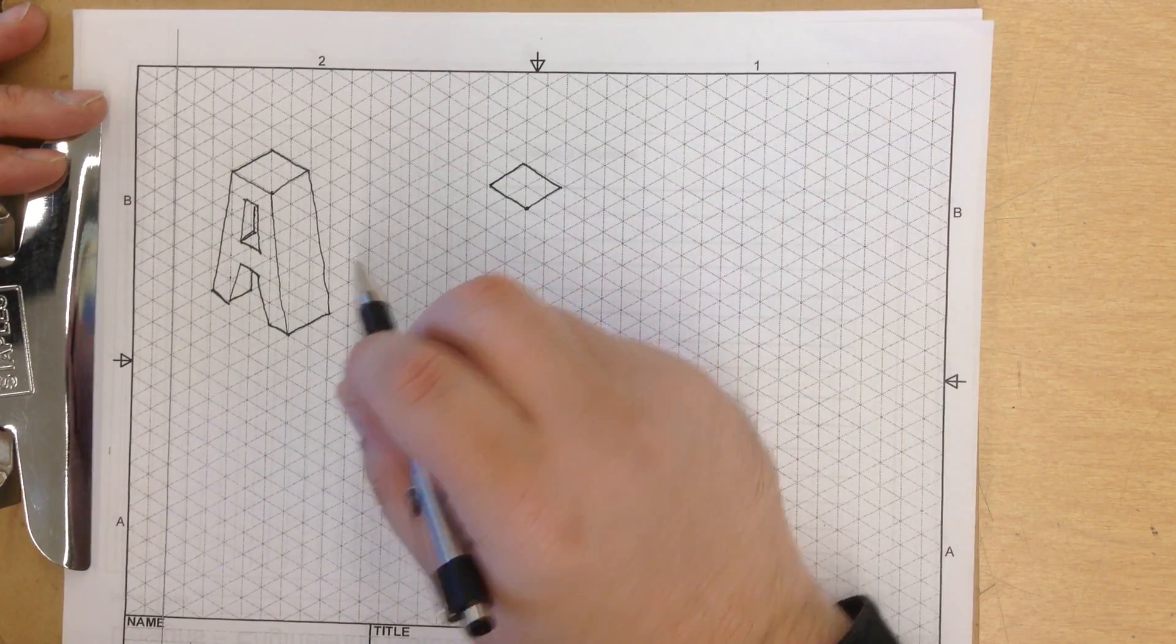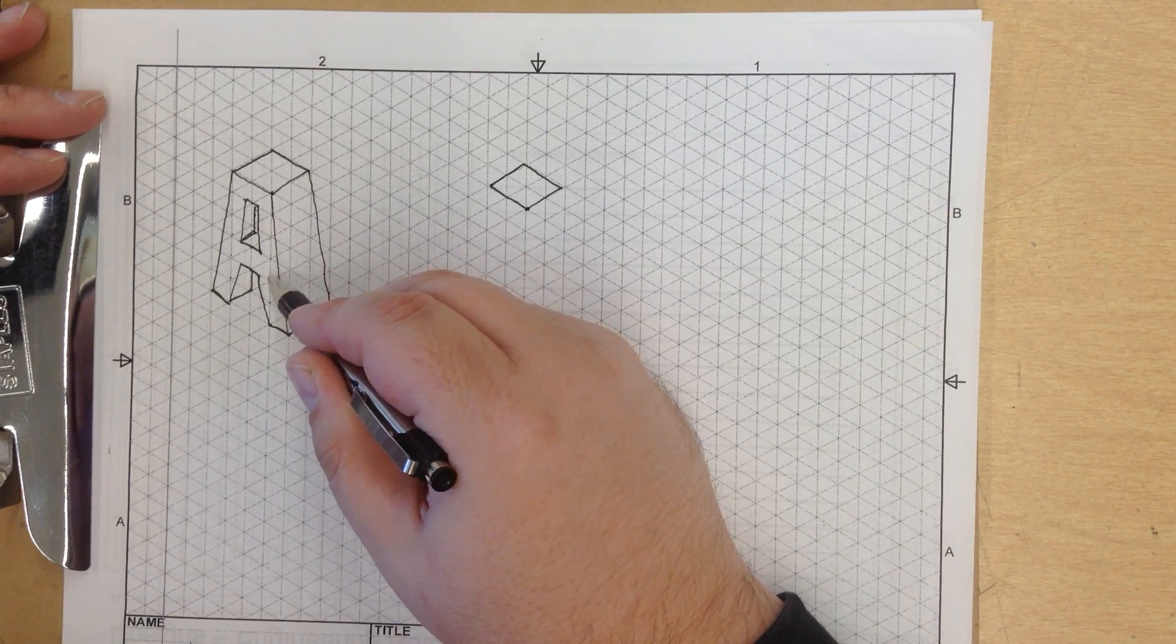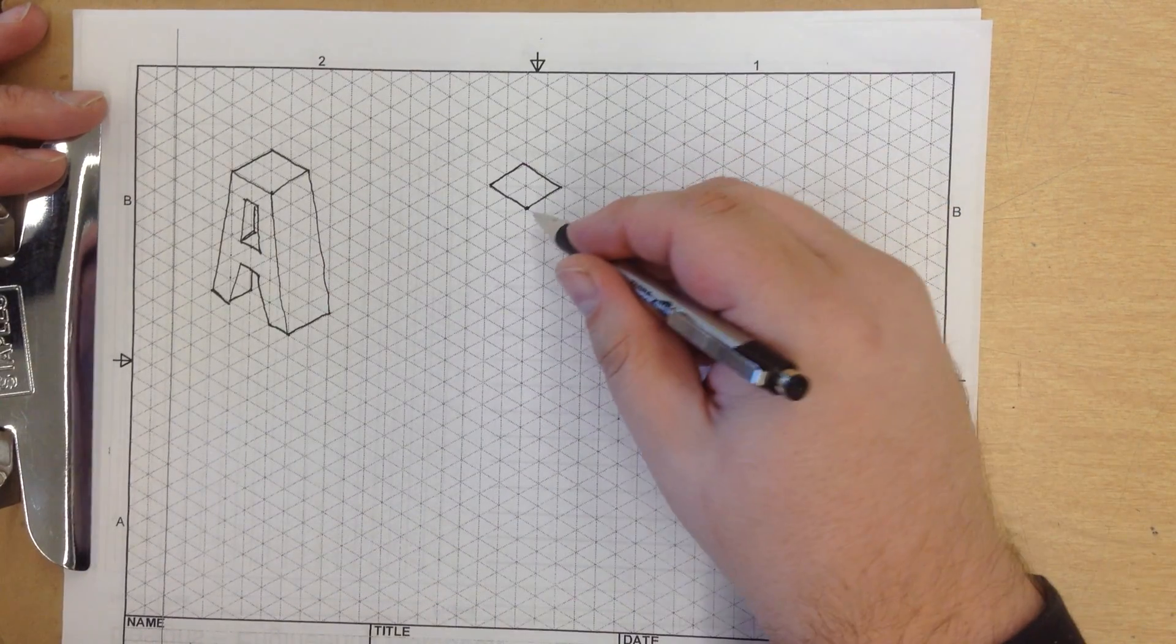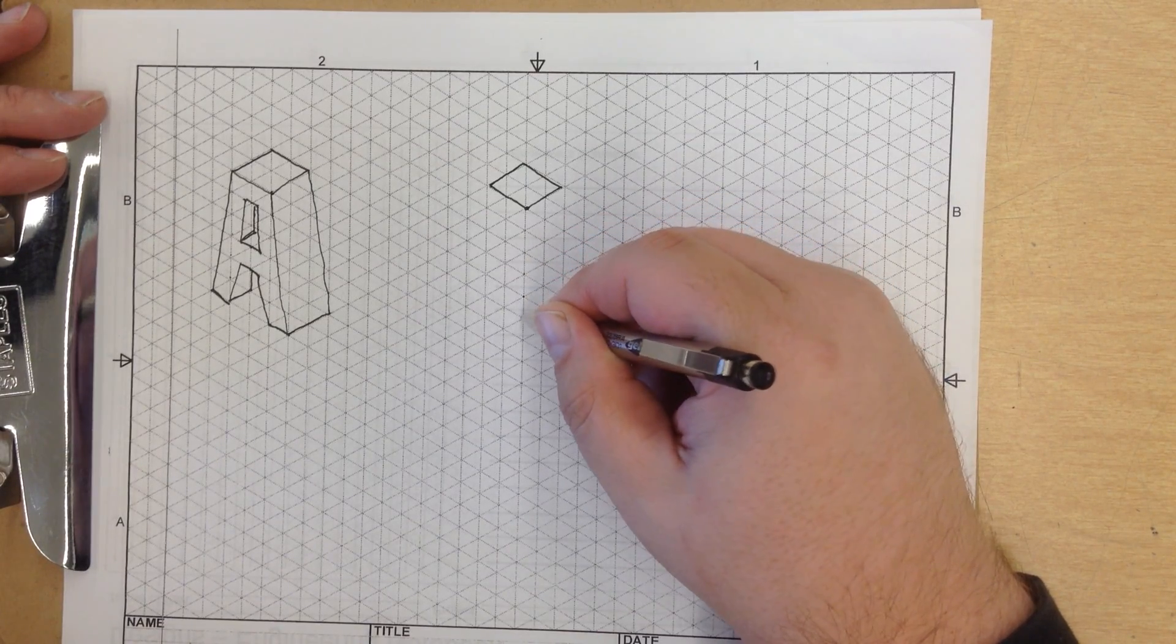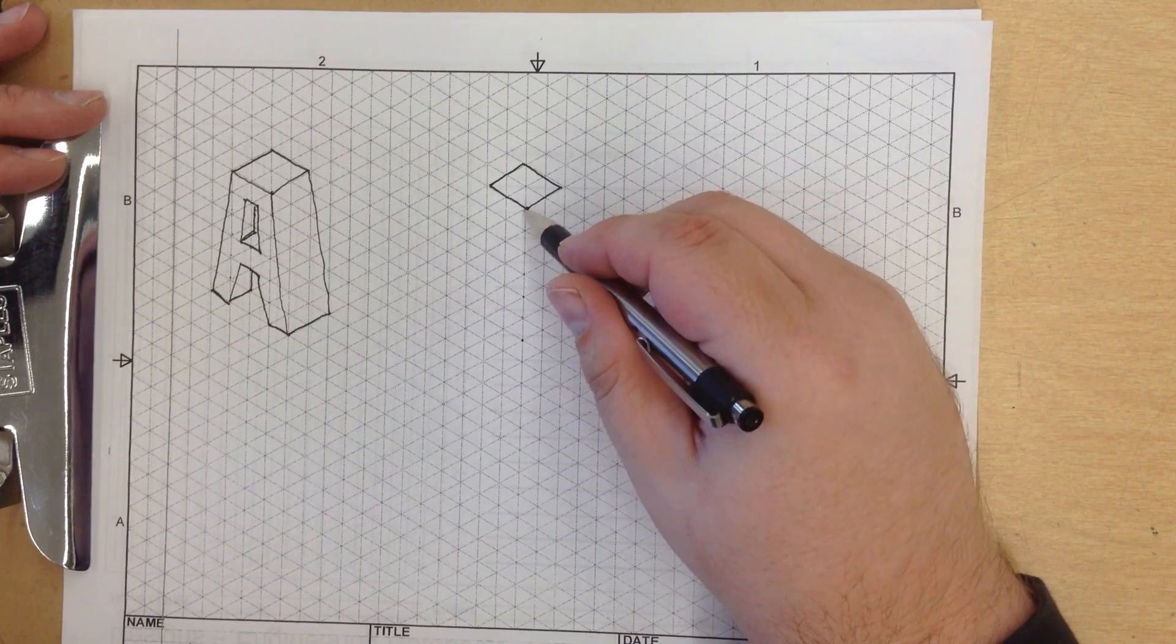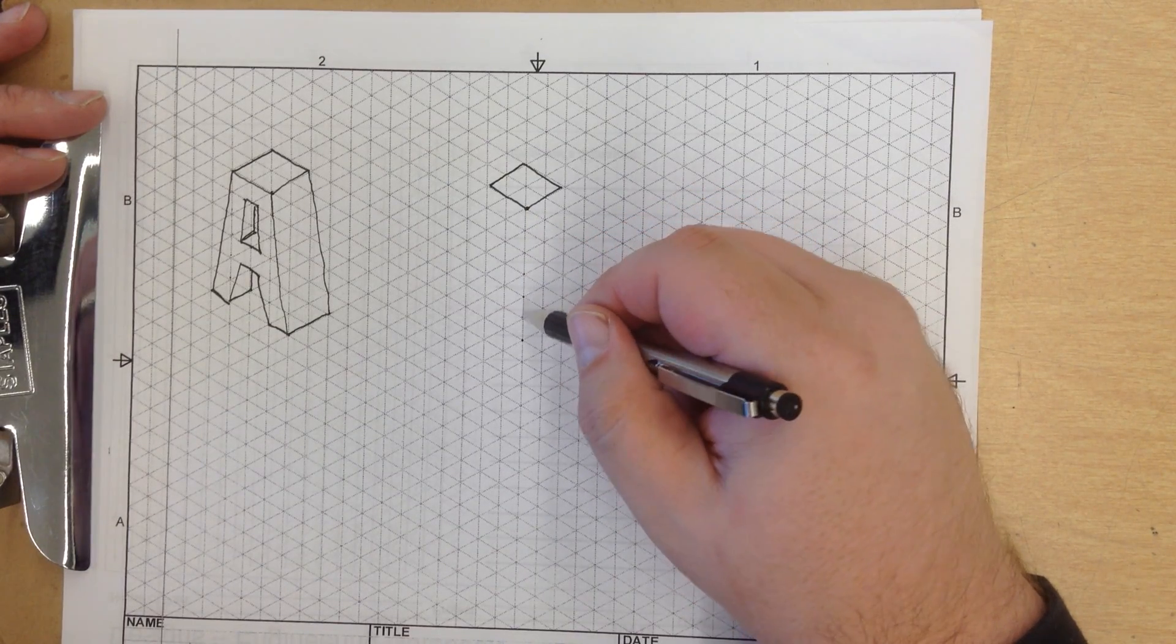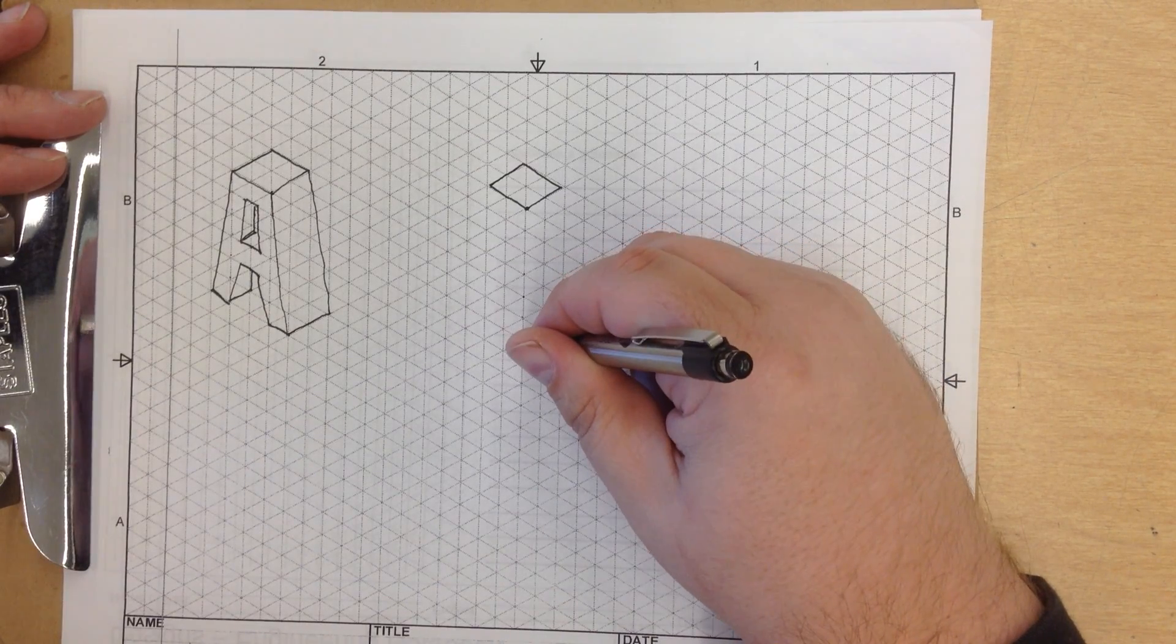Now this is where it gets tricky. From my origin point I'm going to go 1, 2, 3, 4, 5, 6 units down. So 1, 2, 3, 4, 5, 6 units down. I highly suggest you double check. 1, 2, 3, 4, 5, 6 units down. And it goes 1 unit down into the right.